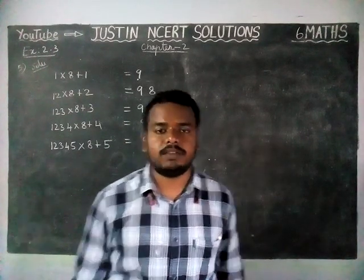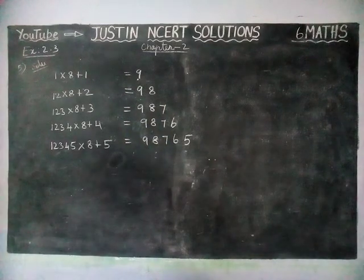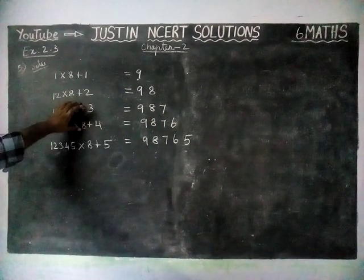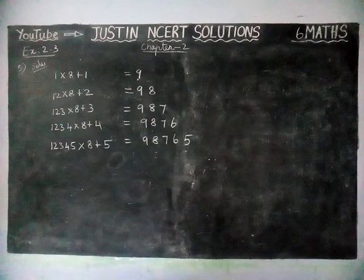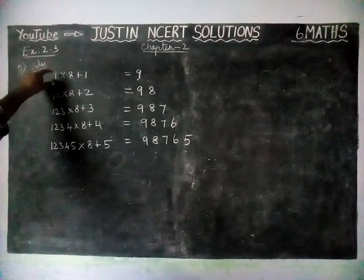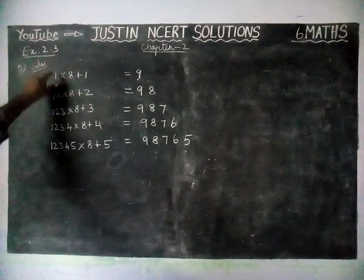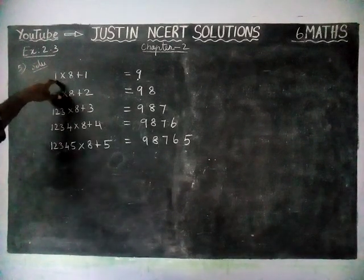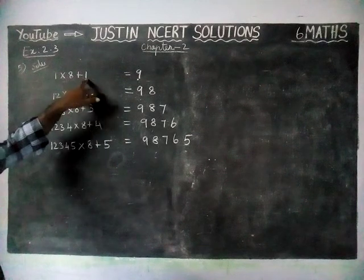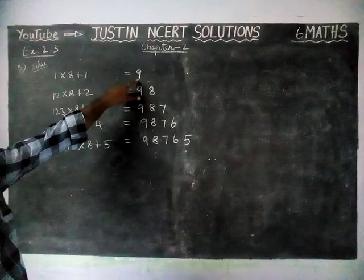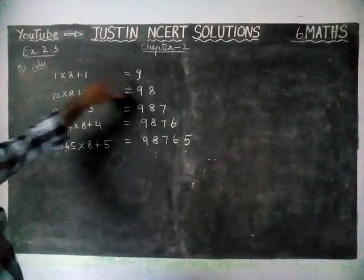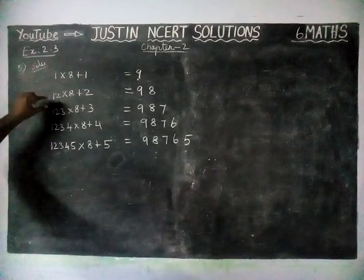Here they have given a pattern. We have to understand the pattern, then we have to write the next two steps. The first number has 1 in the ones place, and we are adding 1 to get the answer 9. So 1 into 8 plus 1 is equal to 9.